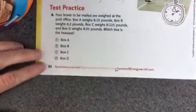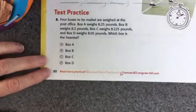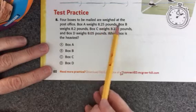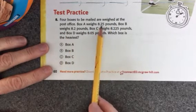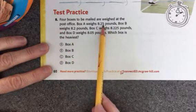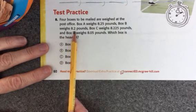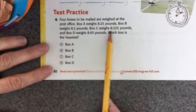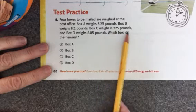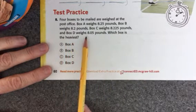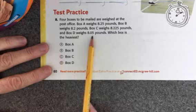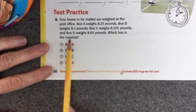Here's the test practice part. Four boxes to be mailed are weighed at the post office. Box A weighs 8 and 25 hundredths pounds. Box B weighs 8 and 2 tenths pounds. Box C weighs 8 and 225 thousandths pounds. And Box D weighs 8 and 5 hundredths pounds. Which box is heaviest?